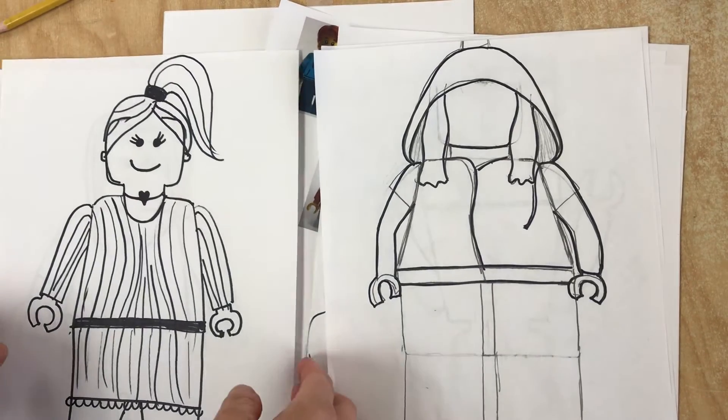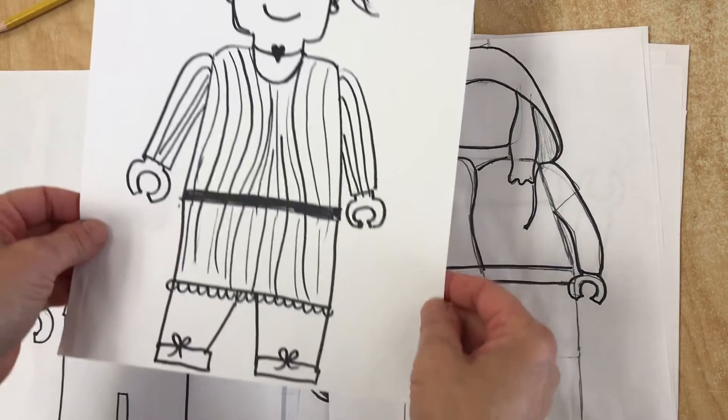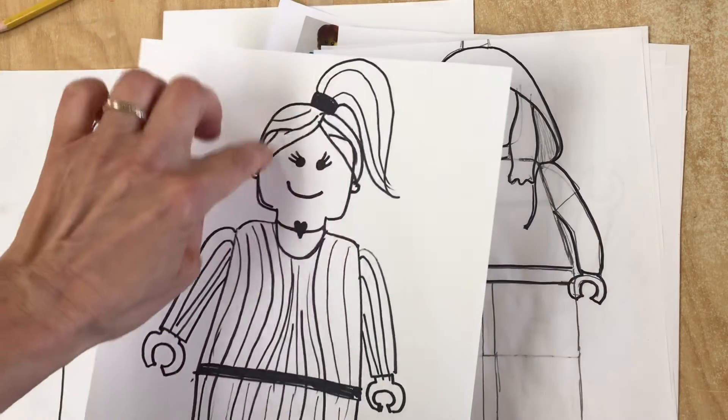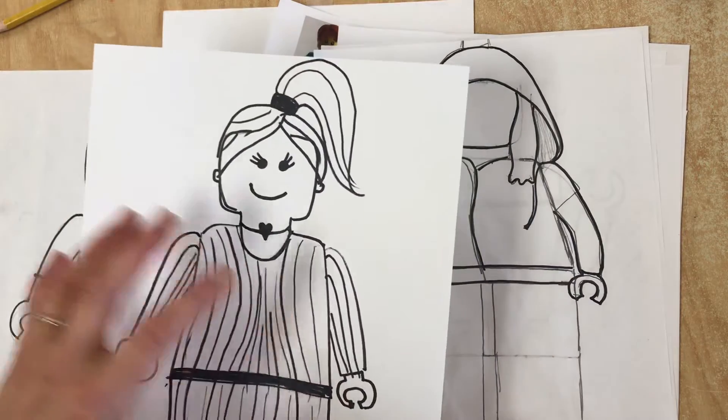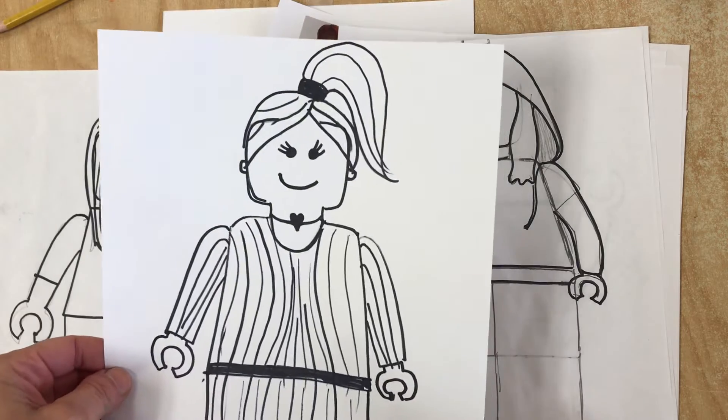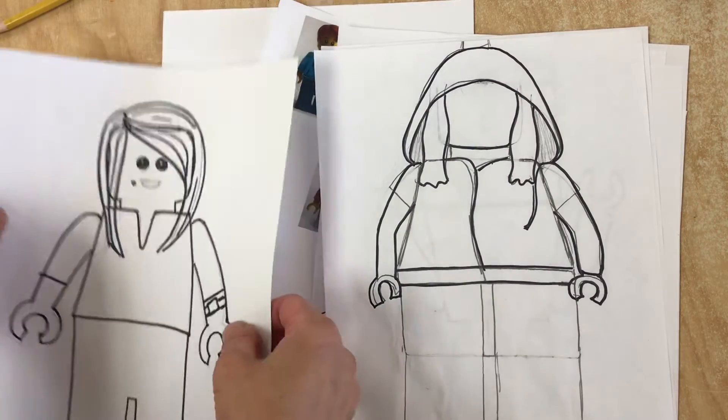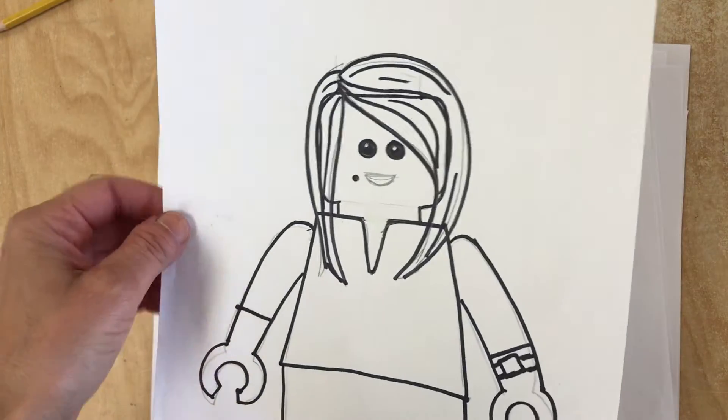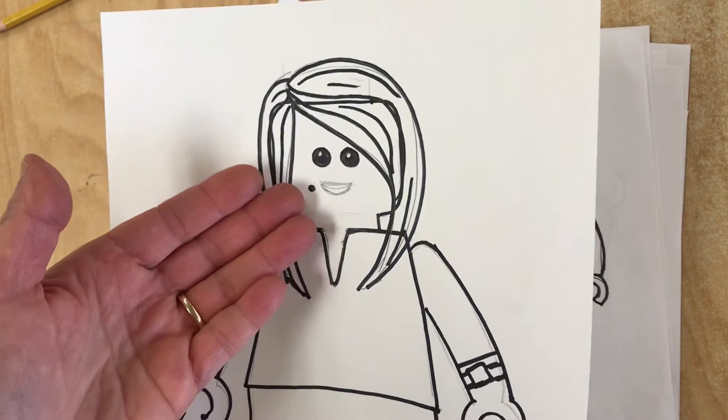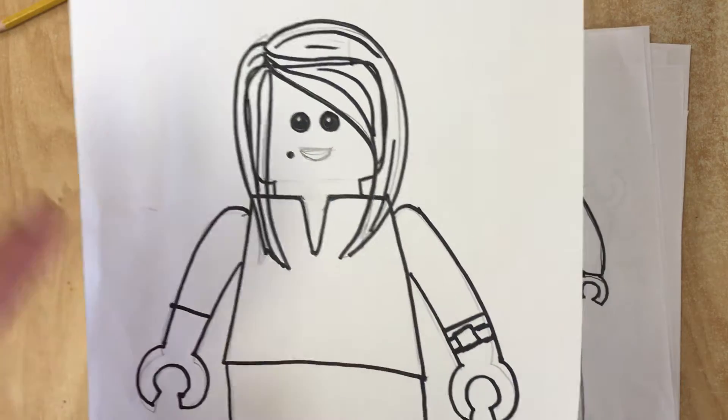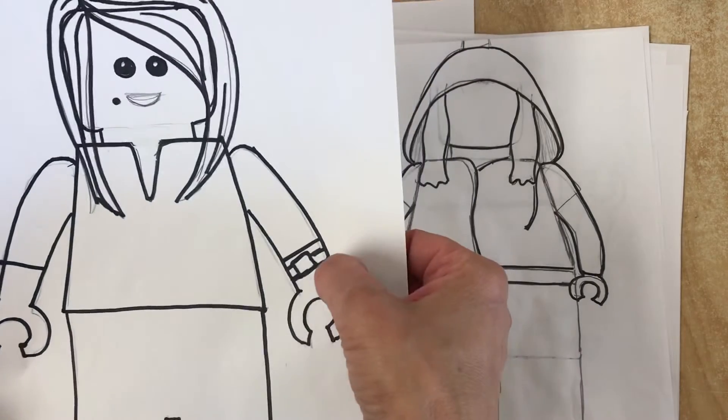You're going to draw yourself as a Lego person, and the hair and clothing are the most important things to make it look like you. So this one is me, and because I do have this beauty mark that not a lot of people have, it makes it look a little bit more like me.